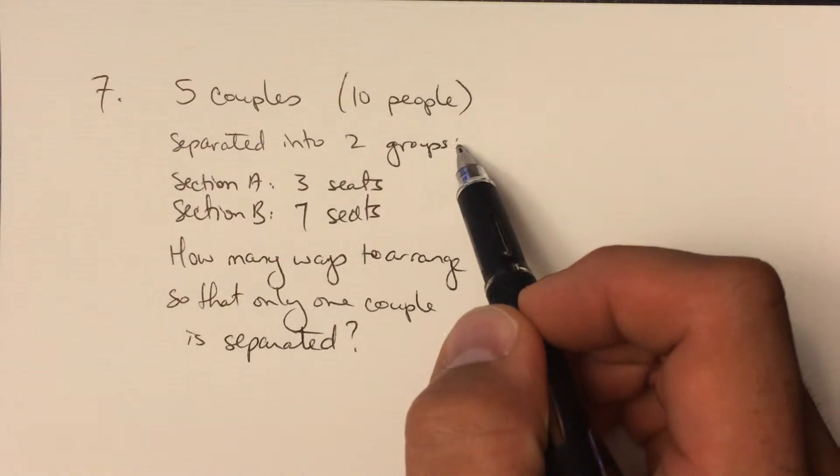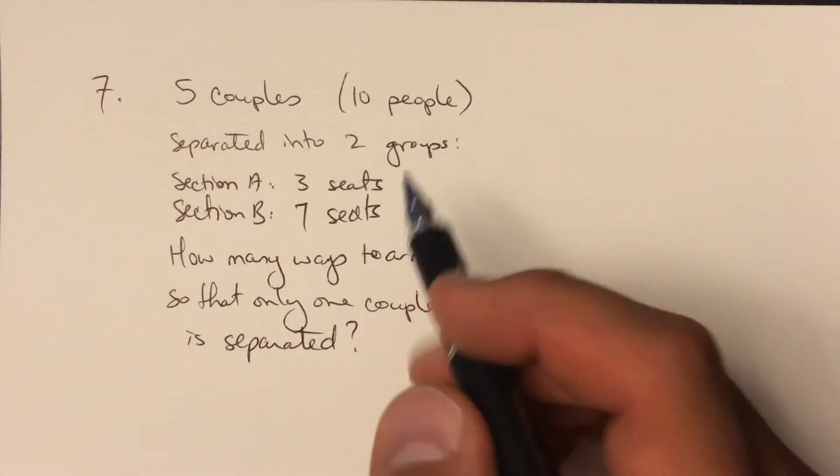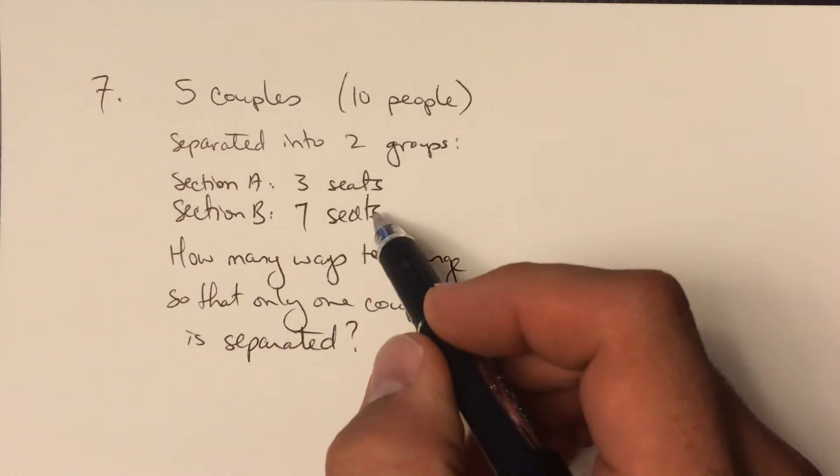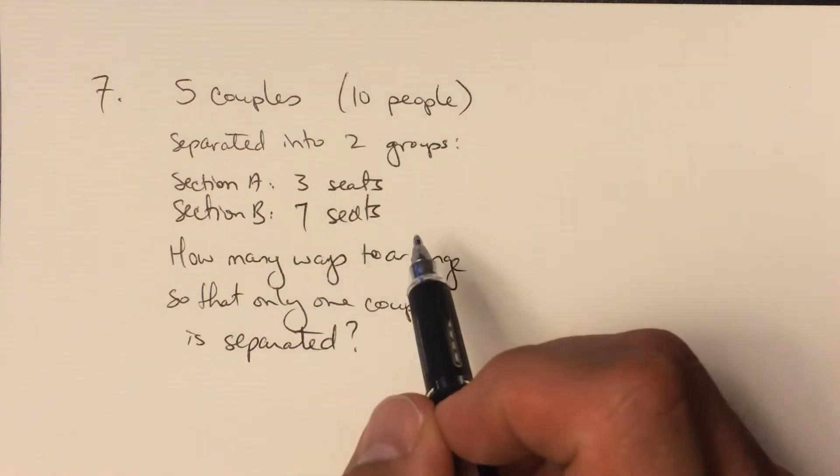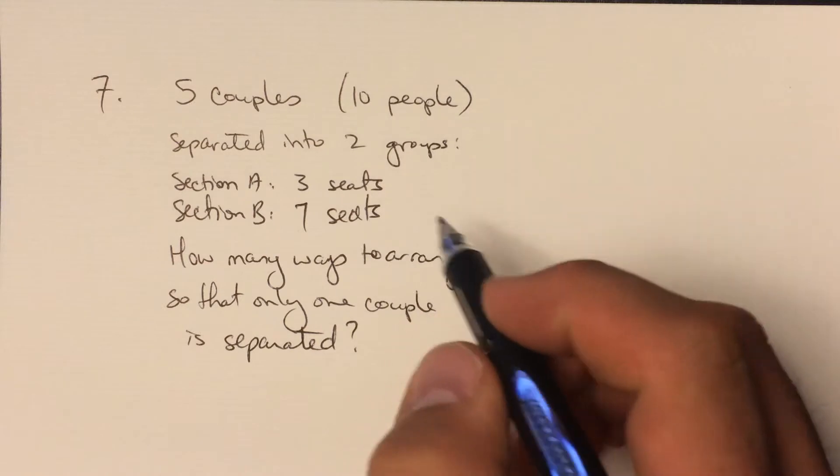They're separated into two groups. There are three seats that are together in one part of the auditorium and seven seats that are together in another part. I'm going to call those section A and B when I draw this out. The question is how many ways are there to arrange their seats so that only one couple is separated?